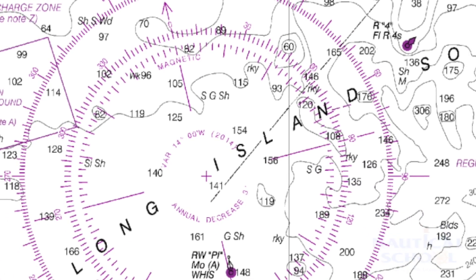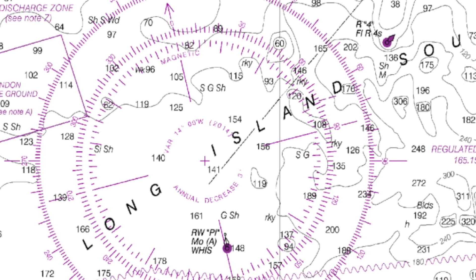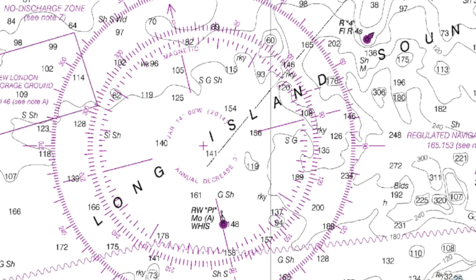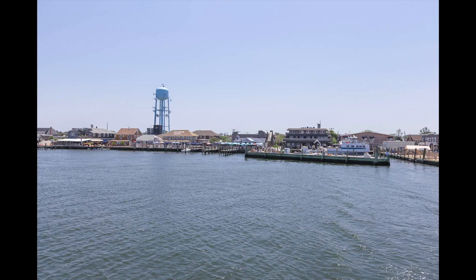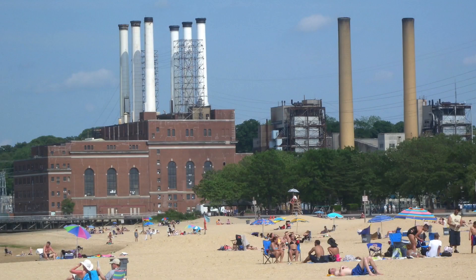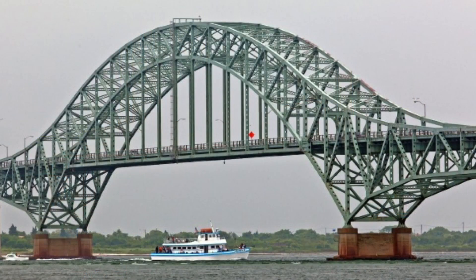Charts also show other relevant information useful for navigating, such as water tanks that are visible from the water, large chimney stacks listed on charts along with bridges, buildings, spires, antennas, etc.